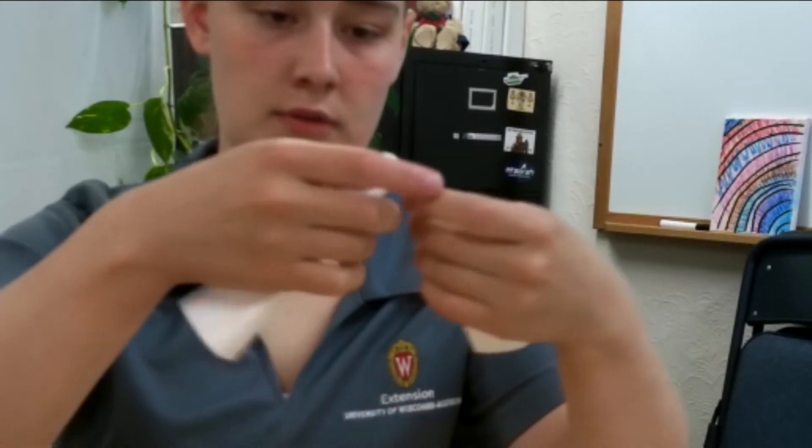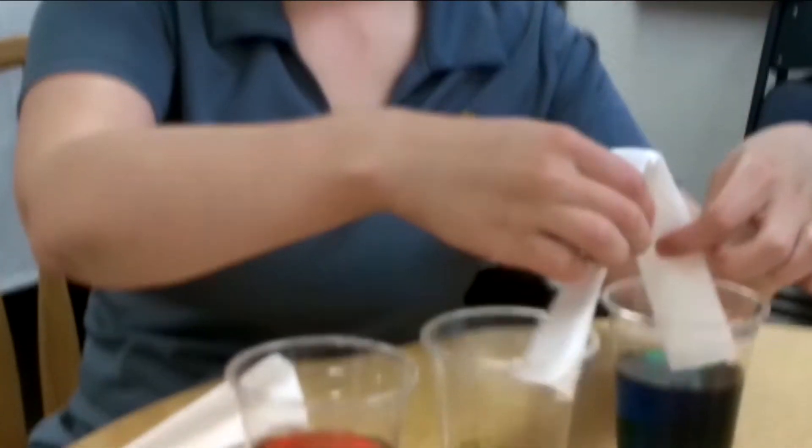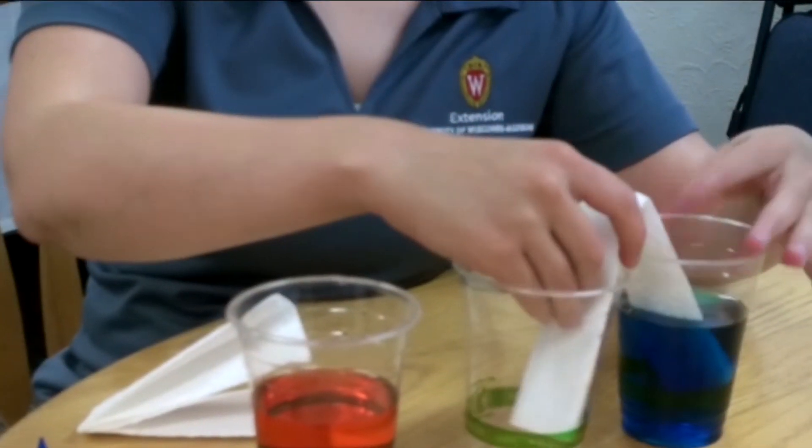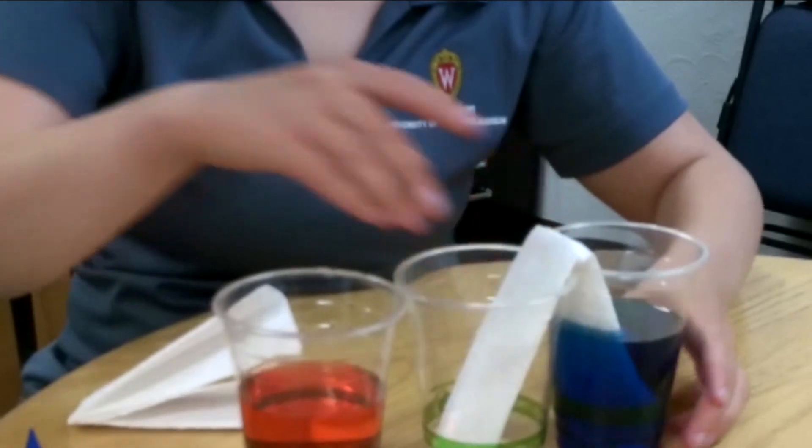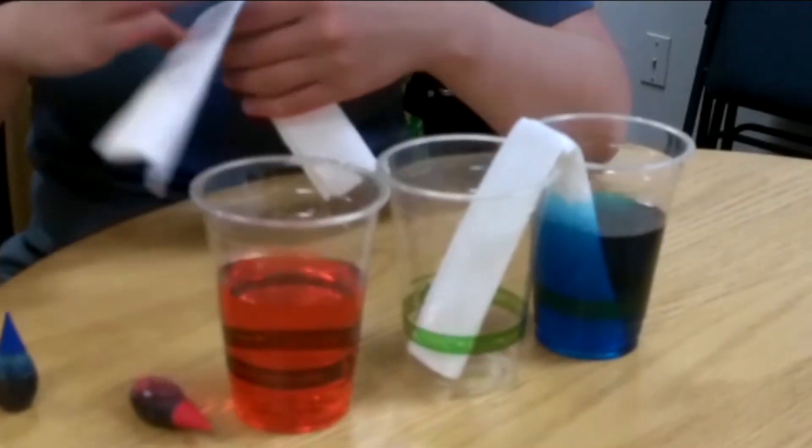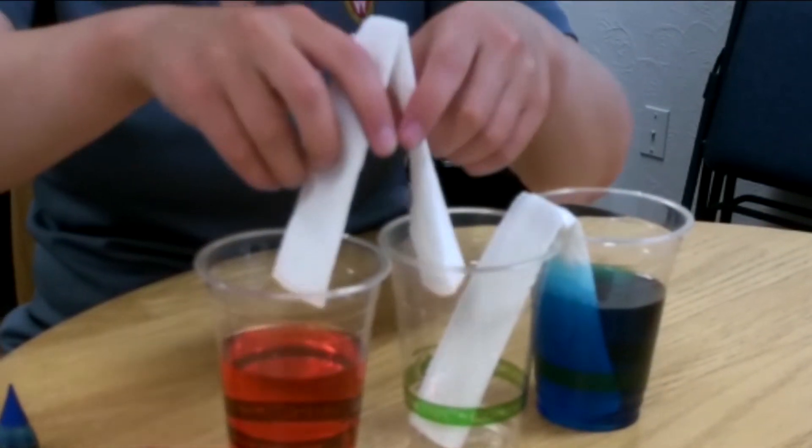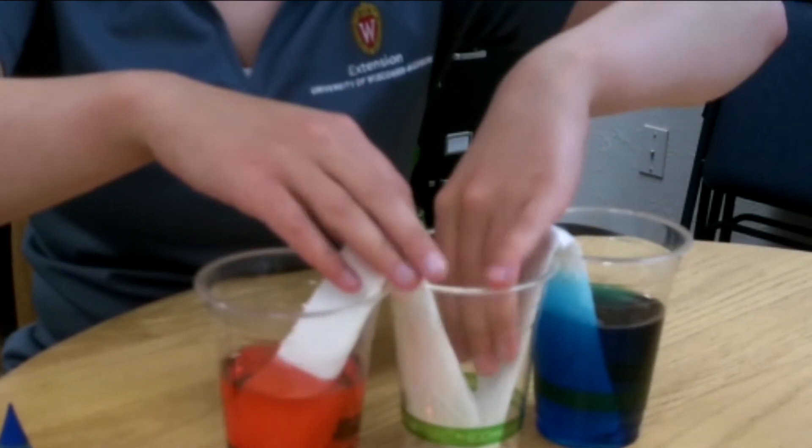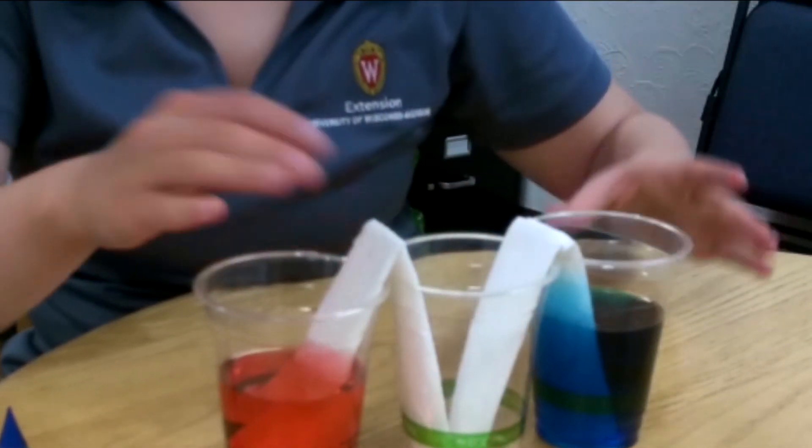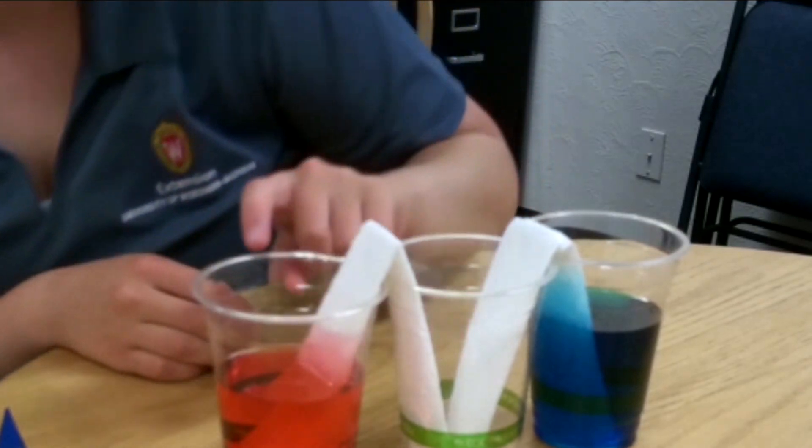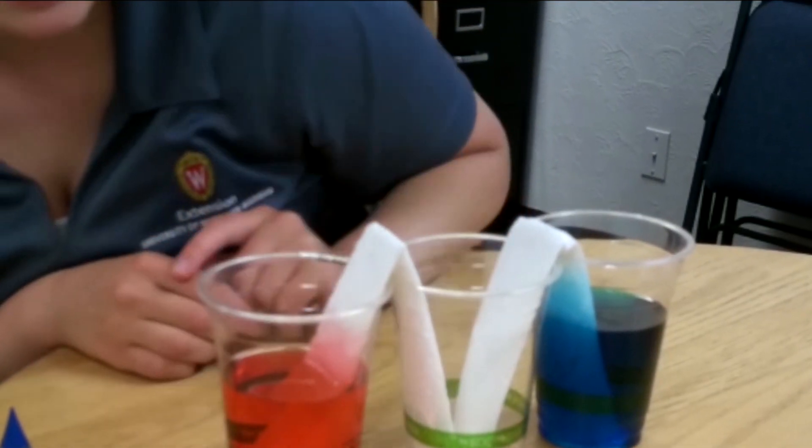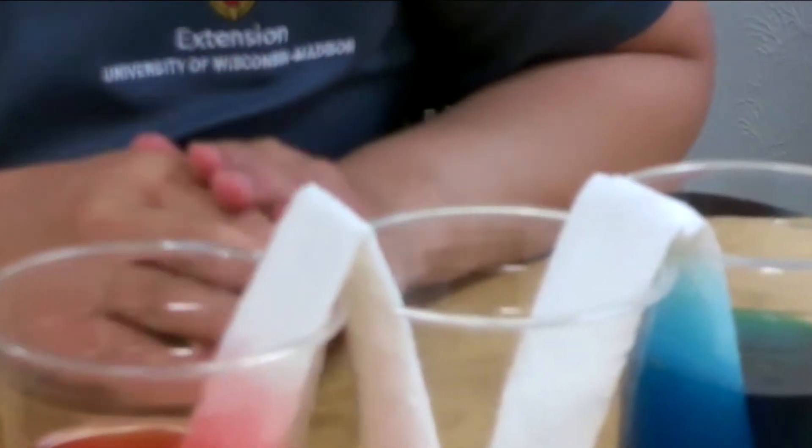Then you're going to take your paper towel and stick it in both ends in both cups. So one's in one cup and one's in the other. One's in the water cup and one's in the empty cup. You're going to do that with both paper towels and set them in. You're going to notice that the water is climbing up fast now, but it will slow down at some point.